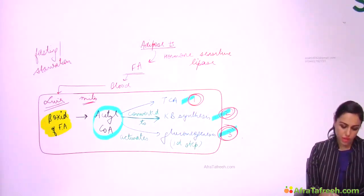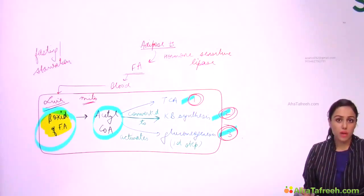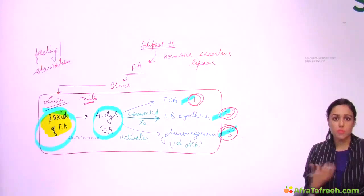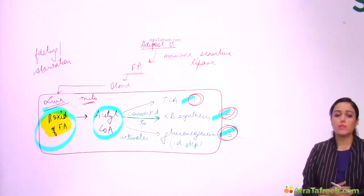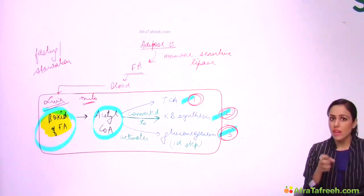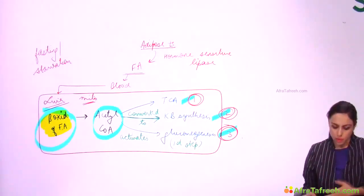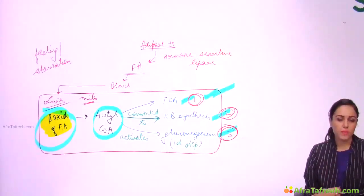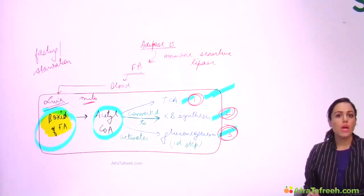In the liver, beta-oxidation of fatty acids releases lots of energy. When the body is in fasting or starvation, all body organs lack fuel, yet the liver has enormous energy. One fatty acid — palmitic acid, the most common — on complete breakdown gives 106 ATPs, compared to one glucose which gives only 30 ATPs. So during starvation, the liver has too much energy and must distribute it to the whole body. First, the liver takes care of itself by sending acetyl-CoA to the TCA cycle for its own energy.